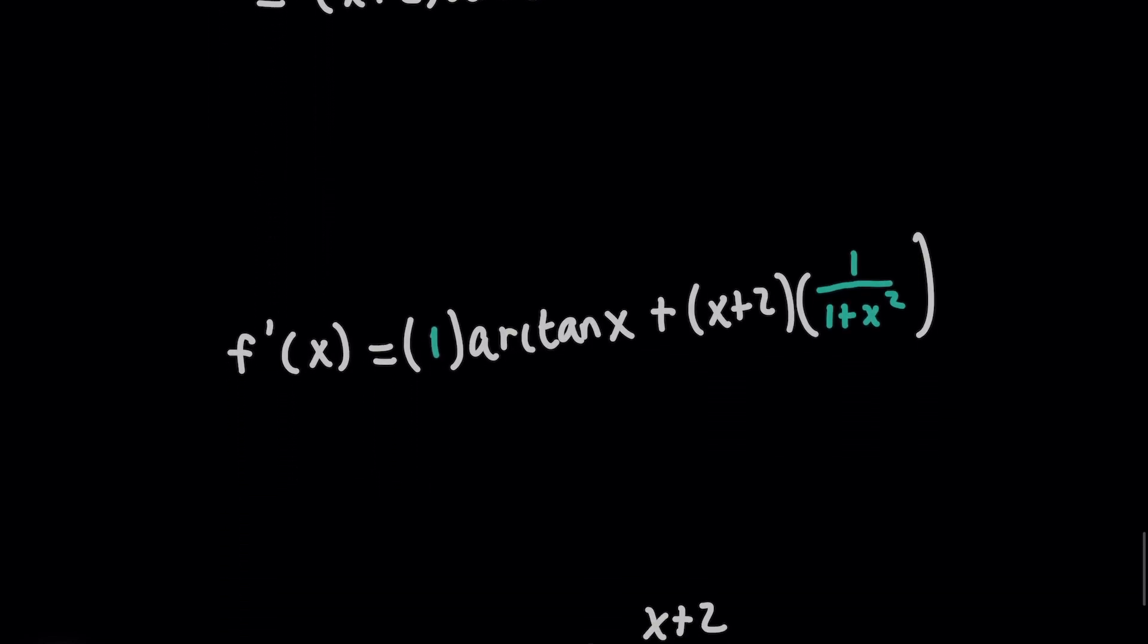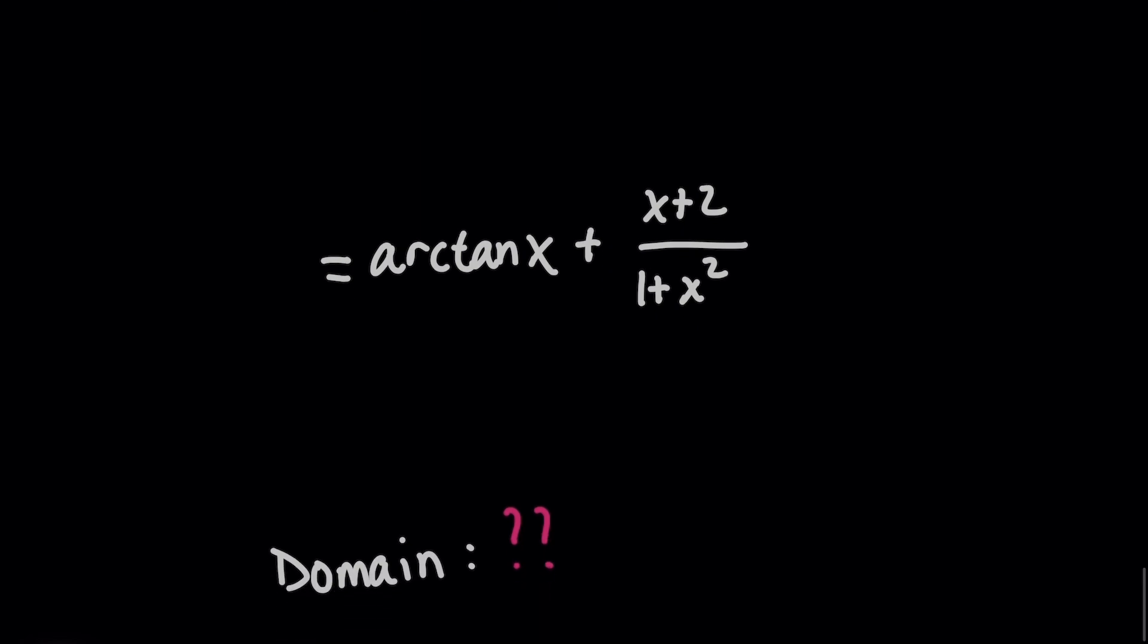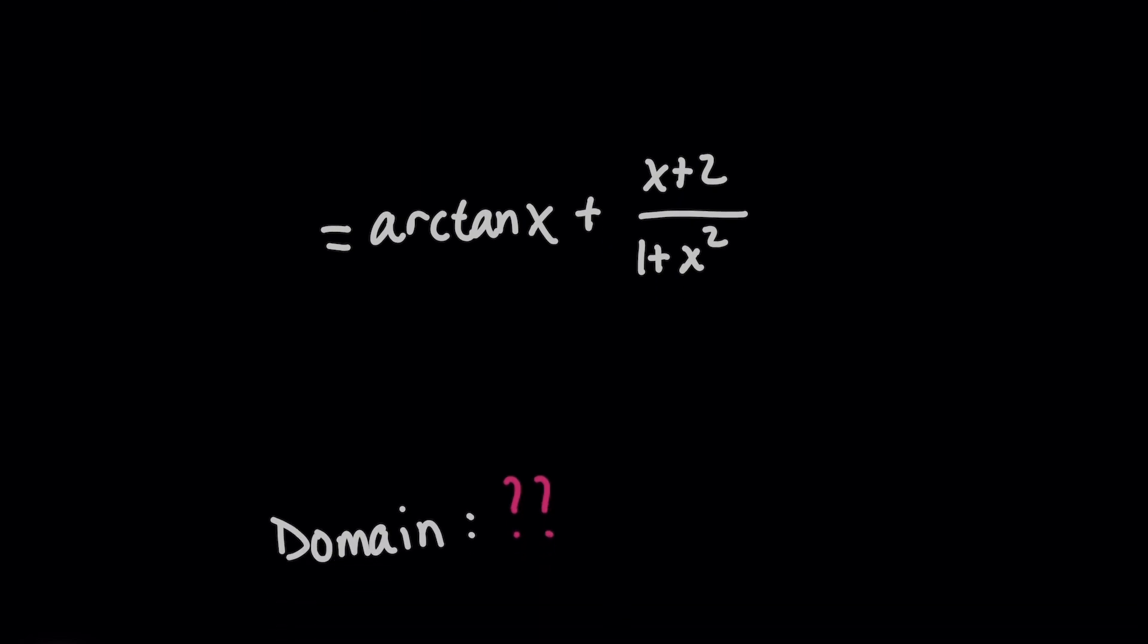So when you have a derivative like this, and you say that this is your final answer here, you need to add something that says, hey, the value of x here cannot be 3. Okay, so now moving on to the final problem.